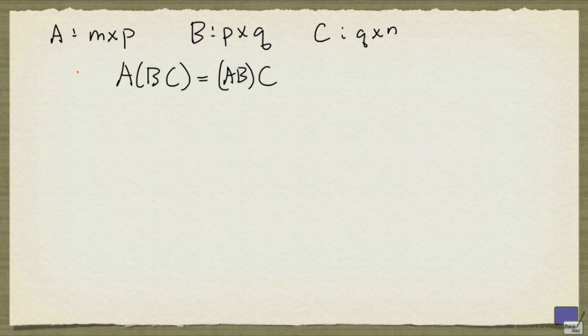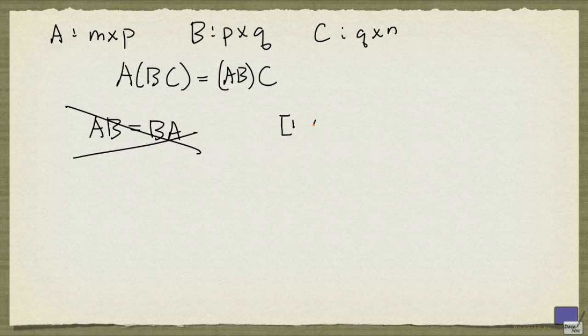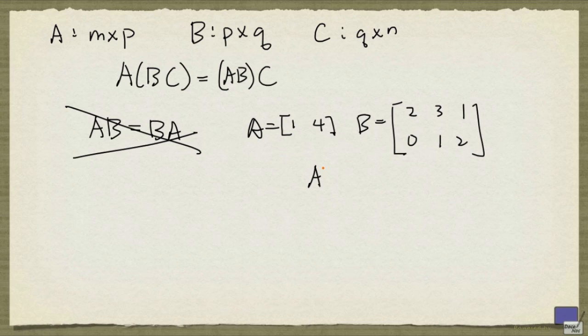But there's one very important point that needs to be made: in general, AB does not necessarily equal BA. First of all, the dimensions of the matrices might not allow you to form the product BA. For example, if A is the matrix (1, 4) and B is the matrix (2, 3, 1, 0, 1, 2), you can form the product AB, but you cannot form the product BA.